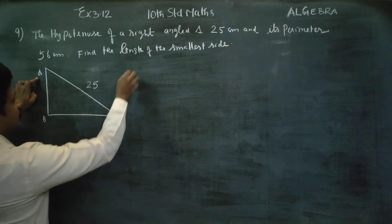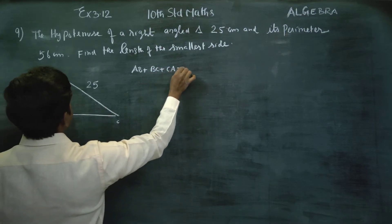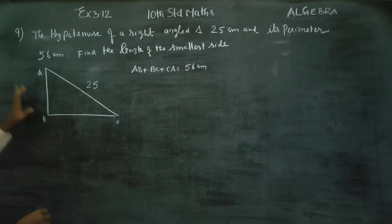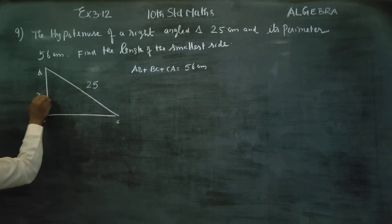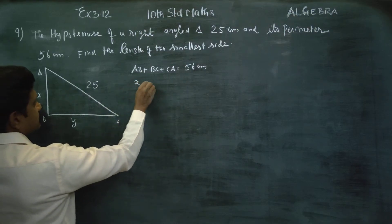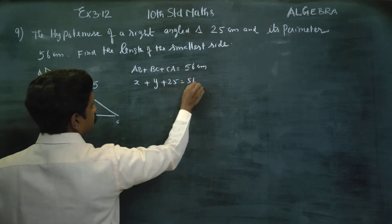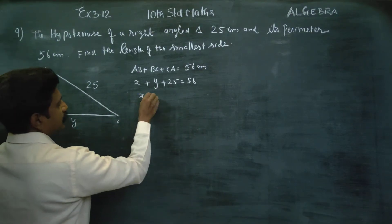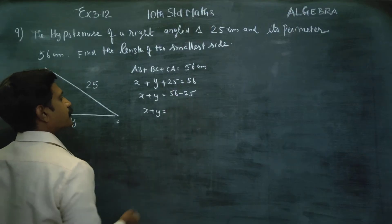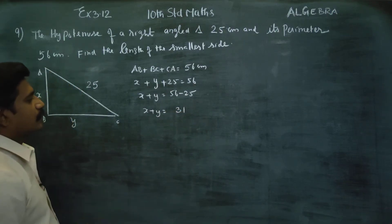The perimeter means AB plus BC plus CA is equal to 56 centimeters. We will find the length of the smallest side. Let x and y be the two sides. Substituting: AB = x, BC = y, CA = 25, so x plus y equals 56 minus 25, which gives x plus y equals 31.